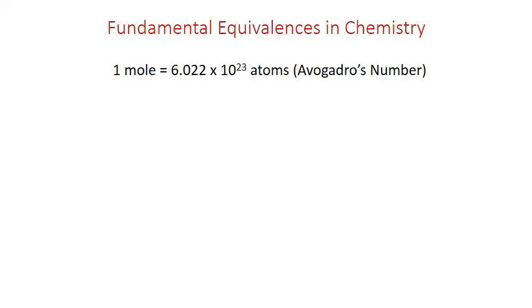We previously learned that the mole is a counting unit equivalent to 6.022 times 10 to the 23rd atoms of any element. This number is known as Avogadro's number and it's based on the average atomic mass of the elements in such a way that one mole is also equal to the periodic table mass of an element in units of grams, and this is known as the molar mass.